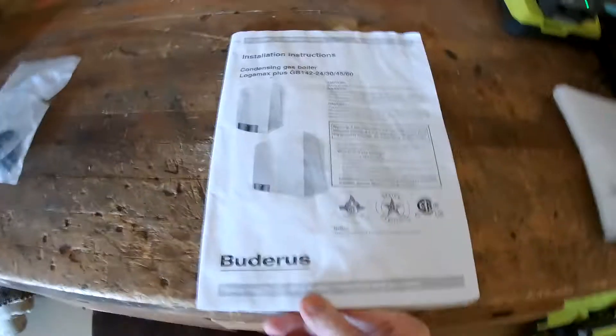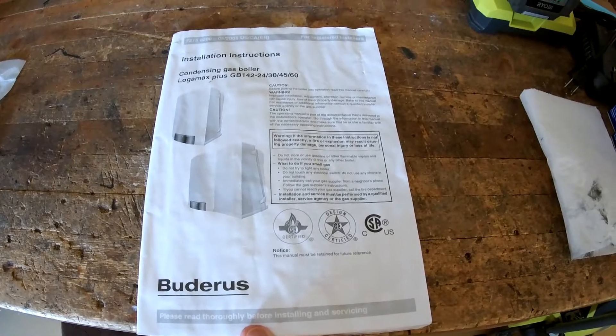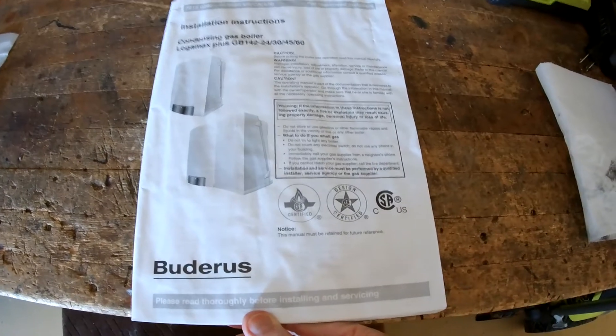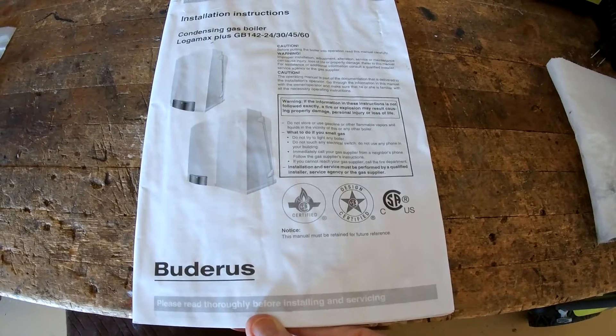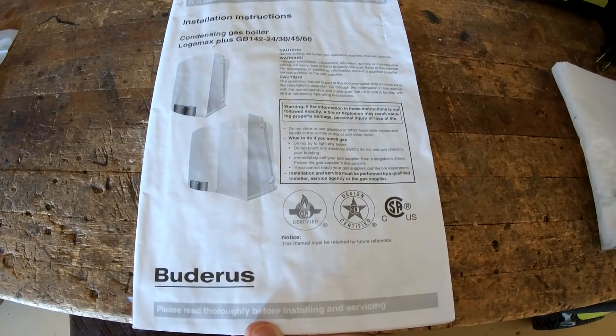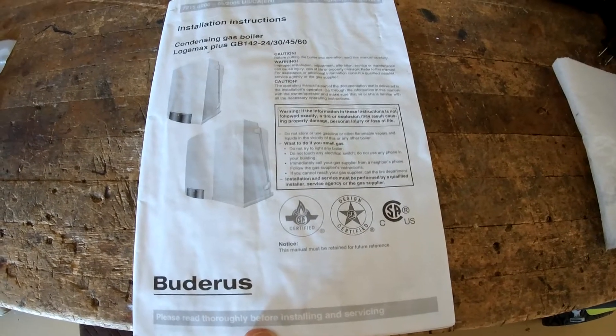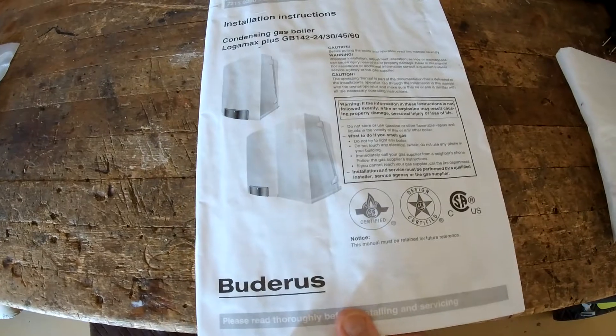So the service code 3C with error code 217 basically has to do with the fan. And this is the installation instructions that I was able to keep when the installer left. I've got the GB142 Model 30. I think the 24, 30, 45, and 60 are relatively the same, just different sizes of capacity.